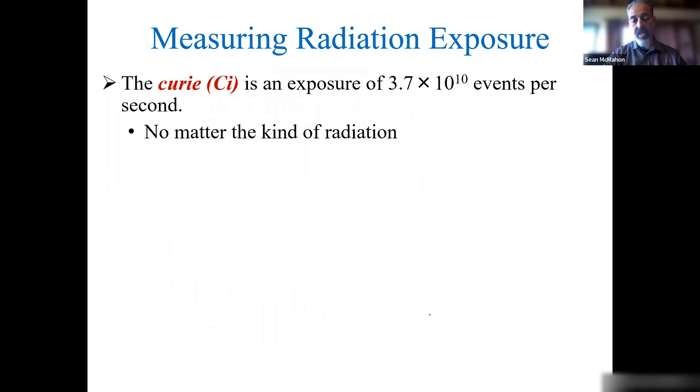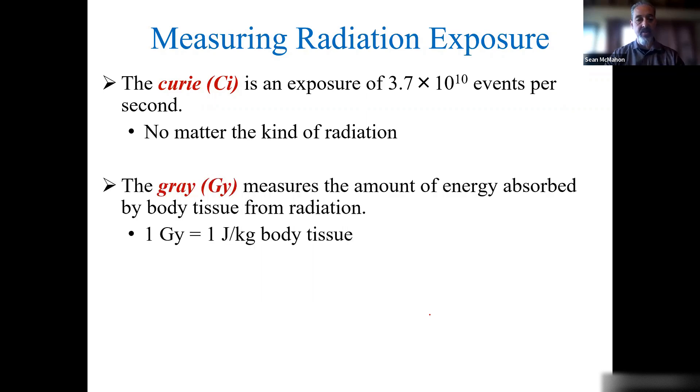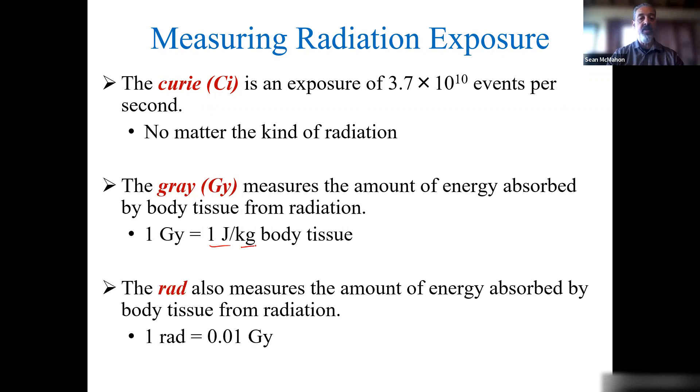How do we measure radiation exposure? I don't have you do a lot of calculations; I'm just bringing up these units so you've seen them. You have the Curie after Madam Curie, and it's an exposure of events per second: 3.7 times 10 to the 10 events per second, doesn't matter the radiation. You have the gray, which is a measure of energy absorbed by body tissue from radiation. It's in joules, a unit of energy, per kilogram of body tissue. The rad is also a measure of energy absorbed by body tissue, but it's essentially a hundredth of a gray.